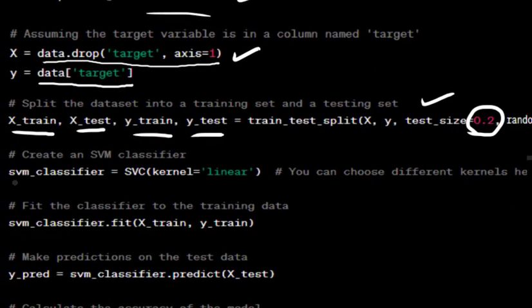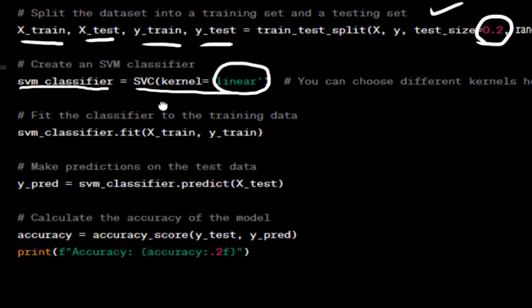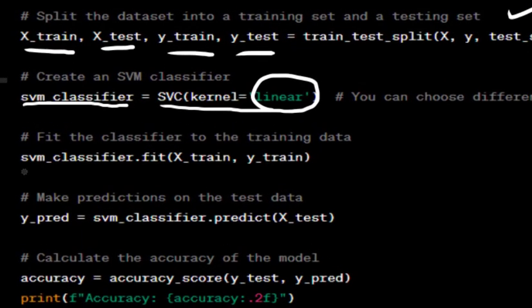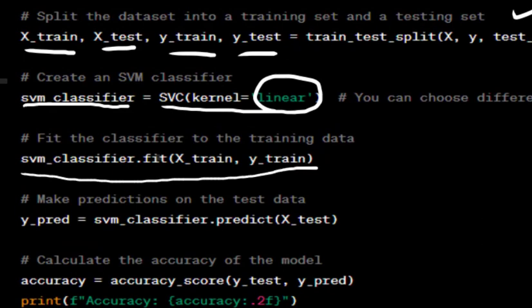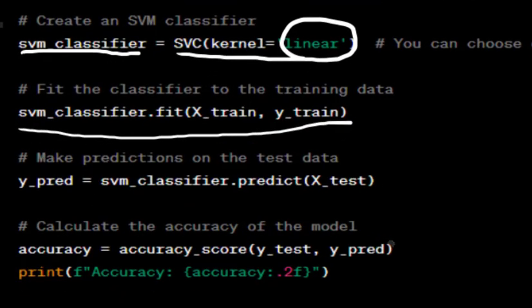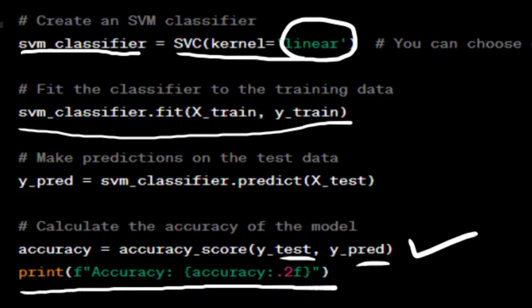We create an SVM classifier using SVC with a linear kernel. We can choose different kernel functions like RBF, poly, etc., depending on the problem. We train the SVM classifier on the training data using the fit method. We use the trained SVM classifier to make predictions on the test data. We calculate the accuracy of the SVM model by comparing the predicted labels y_pred with the actual labels y_test from the test set. The accuracy score is printed to the console.